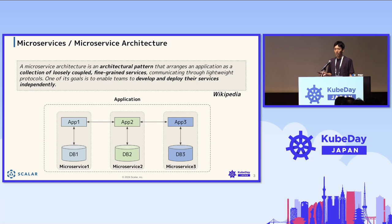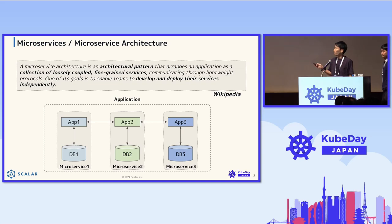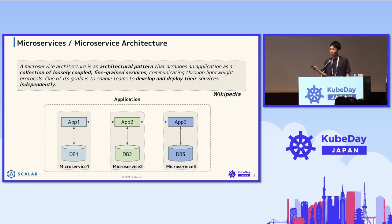Typically, a microservice application tends to employ the database-per-service pattern, where each microservice has its own application and its own database. If you want to access database two from application one, you basically need to go through application two to get the data from DB two. You cannot go to DB two directly from application one, in order to achieve loose coupling and isolate services.